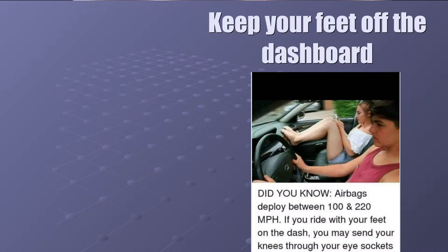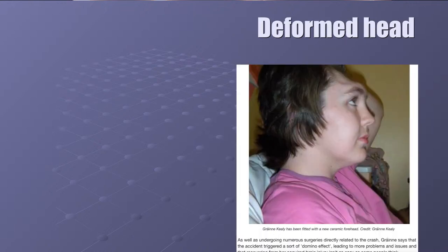Brain trauma will happen anytime you have a concussion. When your knees are coming at you at speeds of 100 to 220 miles per hour, this is what happens — here's a girl who had her feet on the dash; it went right up into her forehead. This was after surgery, so it looked a lot worse before. We don't know what type of learning problems she may be having now. Head trauma is such serious business.